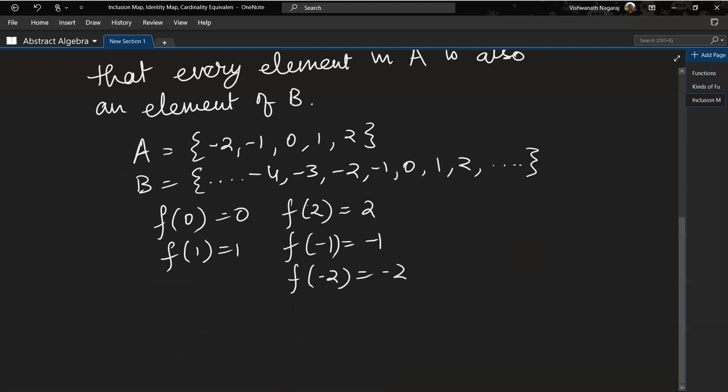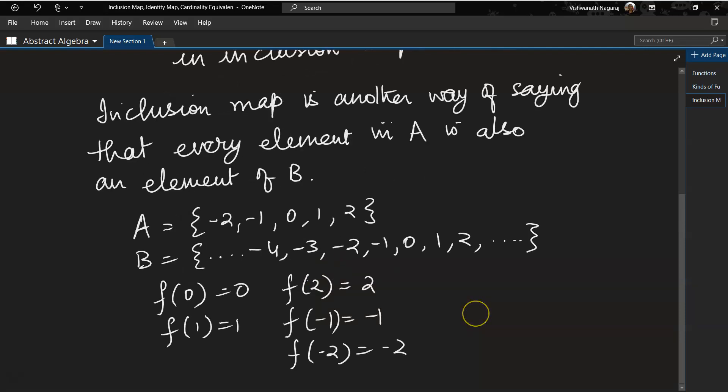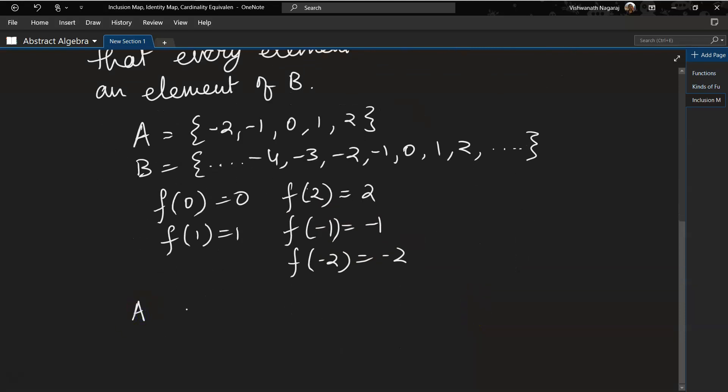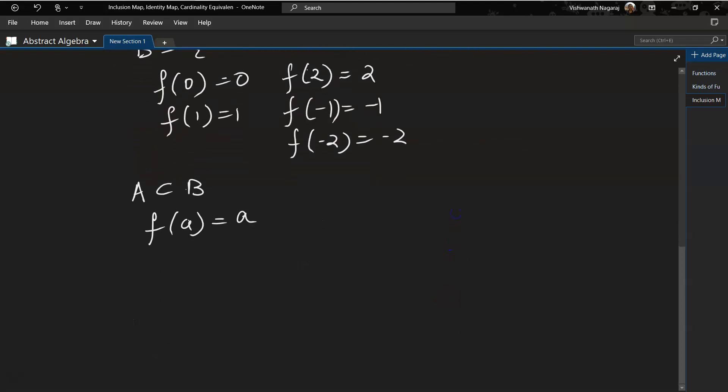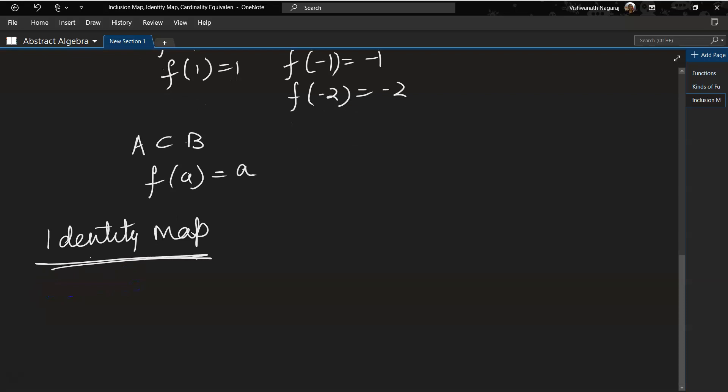Now here, because these are the things that are given to us, we can say that this is an inclusion map. Why? Because A is a subset of B, clearly we can make out that A is a subset of B, and f(a) equals a is part of B, or A is included in B.